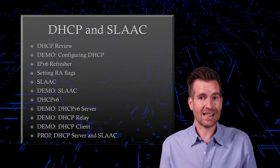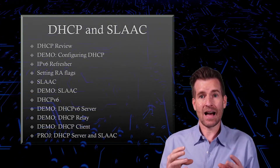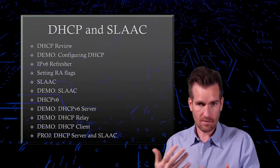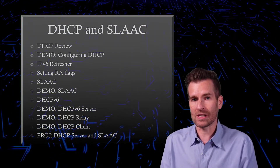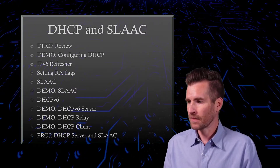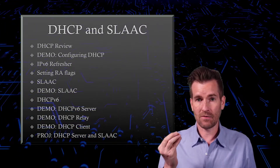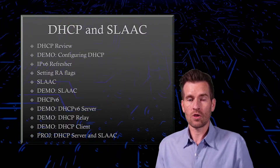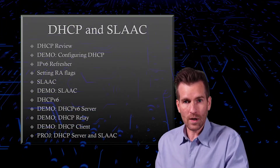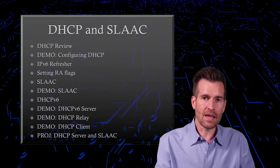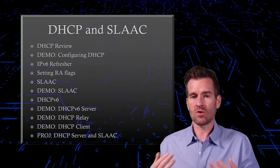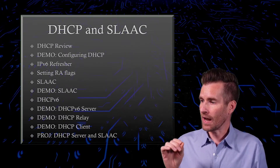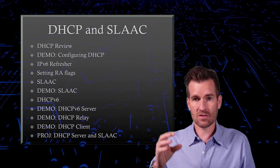Then we're going to get into SLAAC and talk about SLAAC and the automatic address creation configuration. And then we're going to get into DHCP version 6 and how DHCP version 6 can either work with SLAAC or be a replacement for SLAAC to set up addresses on machines.